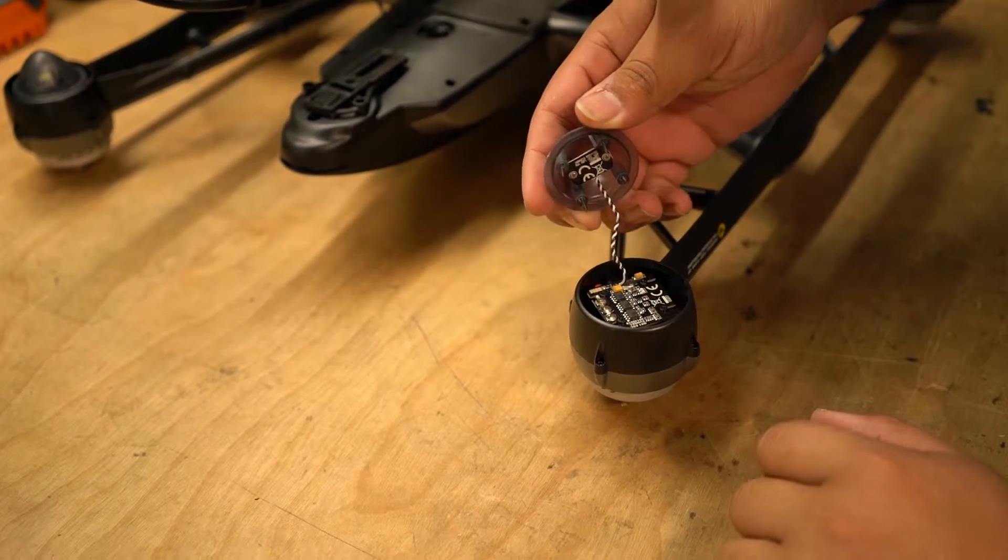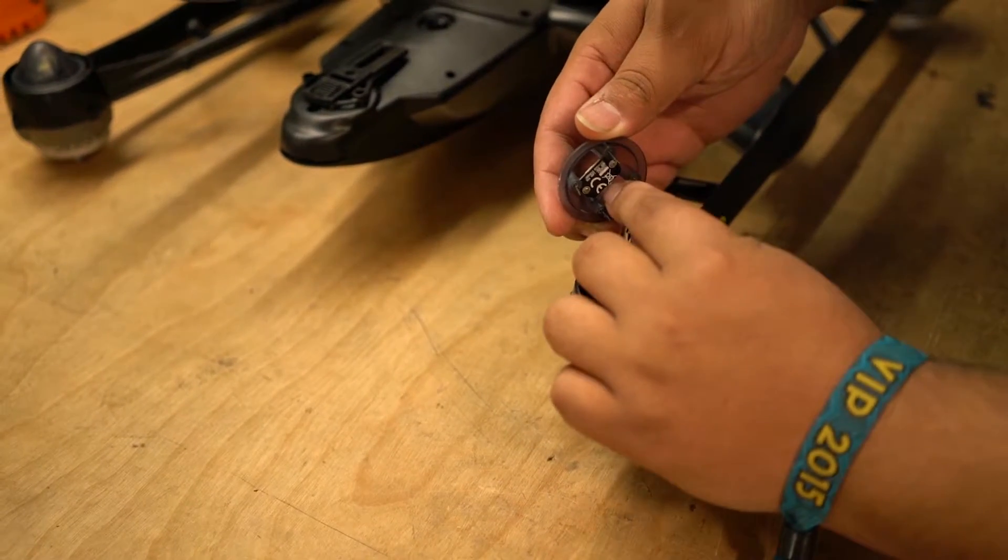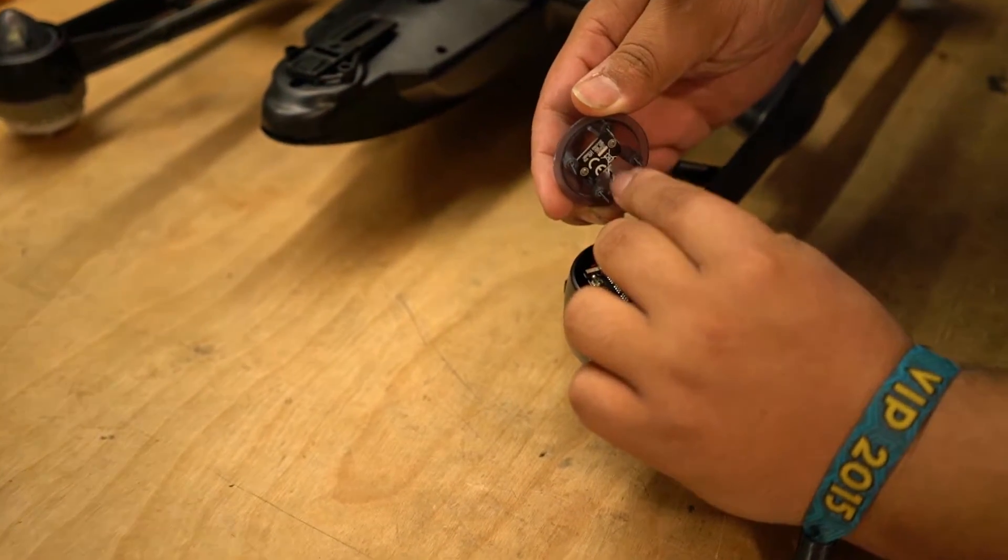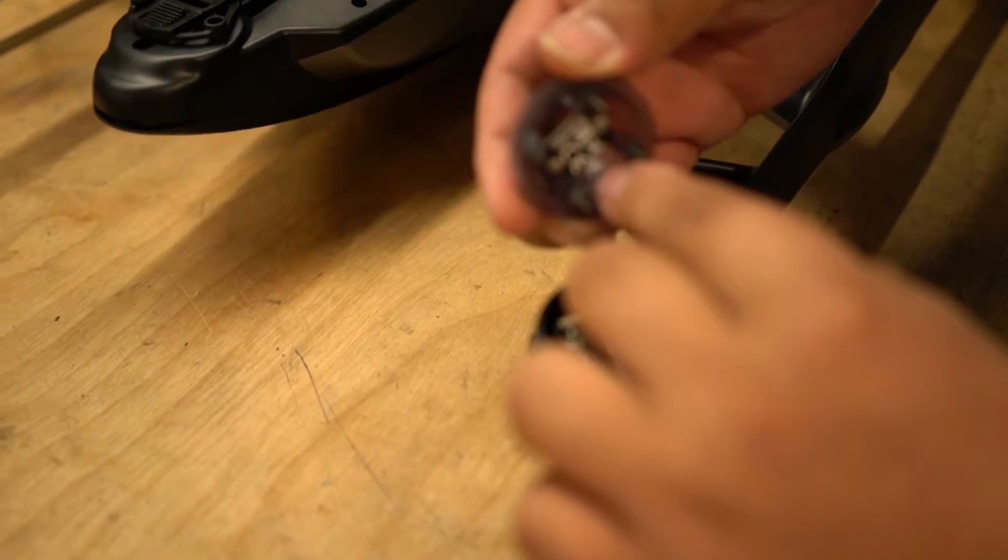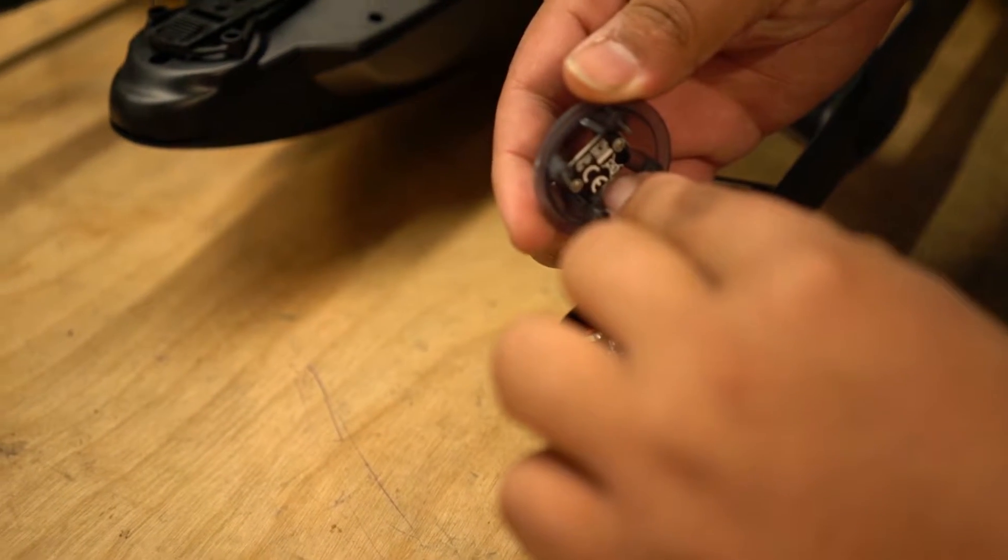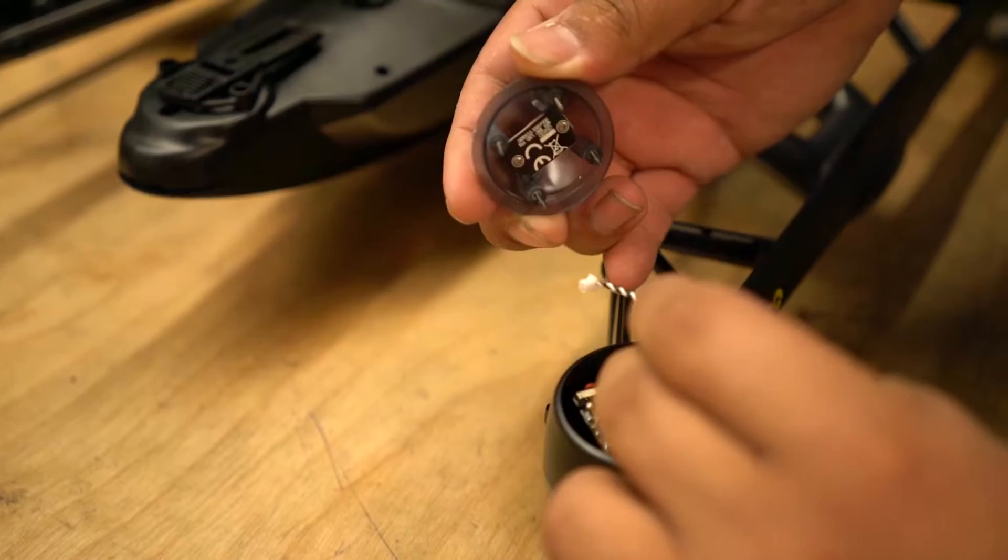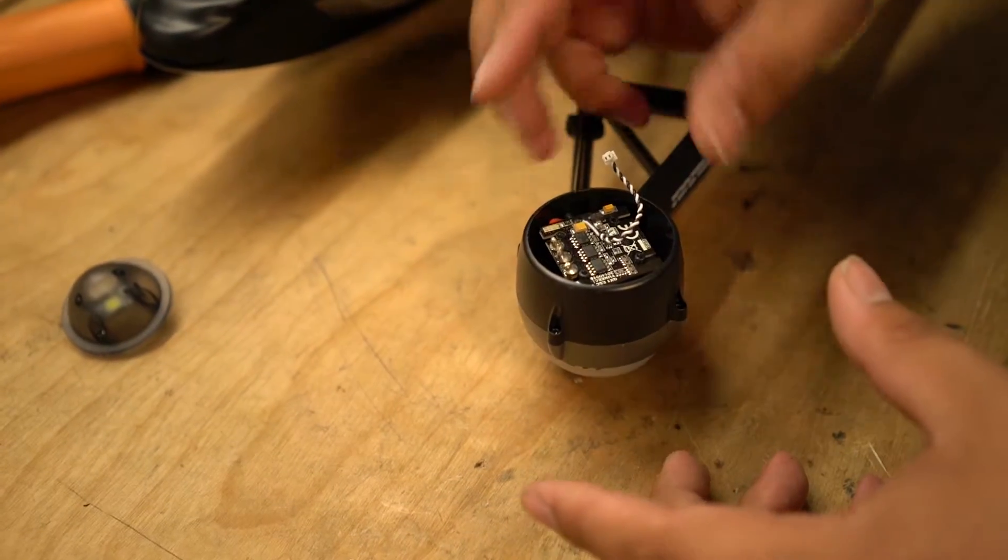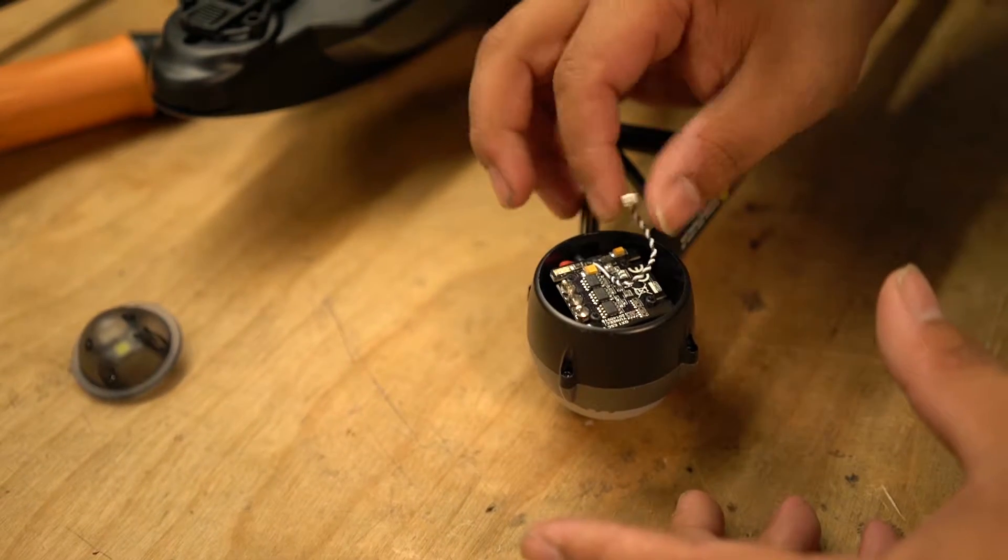And then you should be able to just squeeze the cover and pull it right off like that. Personally, I like to disconnect this cable right here in the beginning. That way it's very simple when it comes to pulling everything else out. Just pop that out and put it aside.